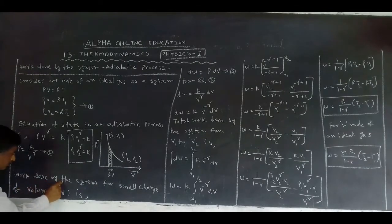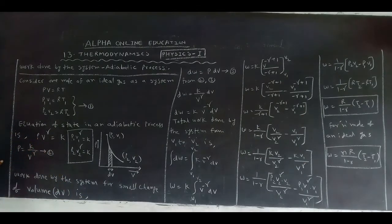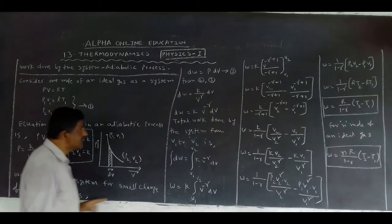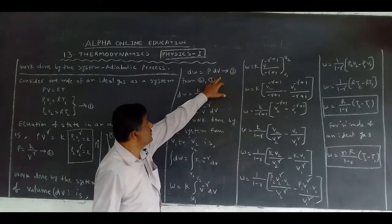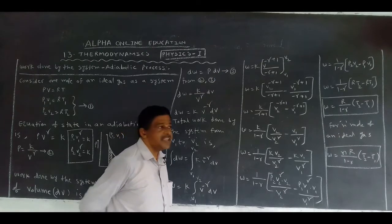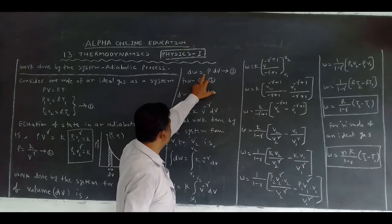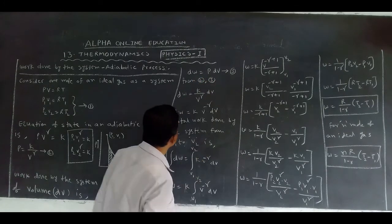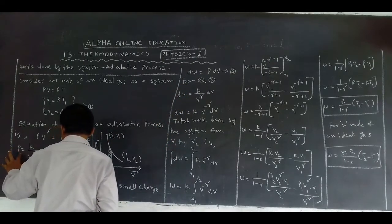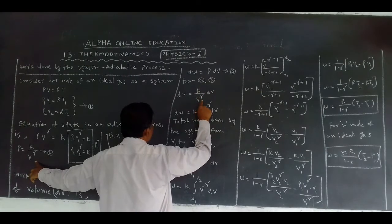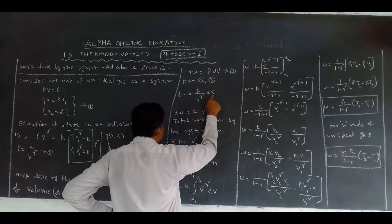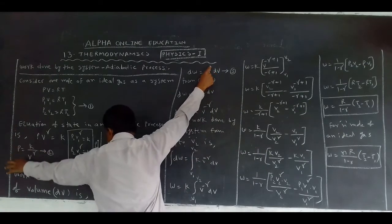Work done by the system for a small change of volume dV is dW = P dV — this was proved in the first class of this chapter. Substituting equation 2 (P = K / V^γ) in place of P, we get dW = (K / V^γ) dV. Taking V^γ to the numerator, the power becomes negative: dW = K · V^(−γ) dV.